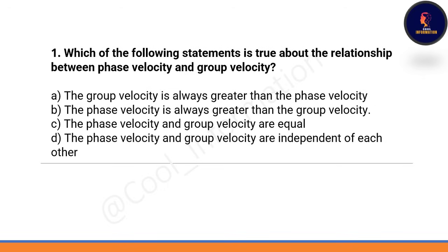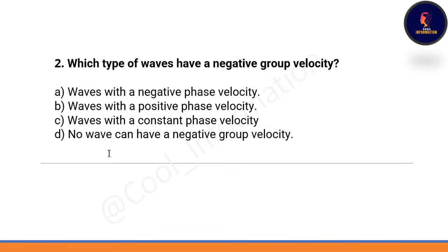The first question is: which of the following statements is true about the relationship between phase velocity and group velocity? Option A: group velocity is always greater than phase velocity. Option B: phase velocity is always greater than group velocity. Option C: phase velocity and group velocity are equal. Option D: they are independent of each other. The correct option is C — phase velocity and group velocity are equal.